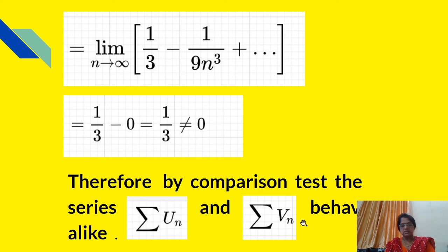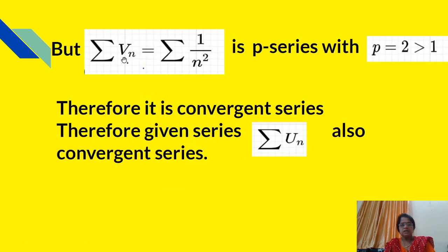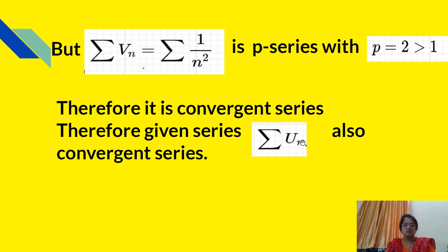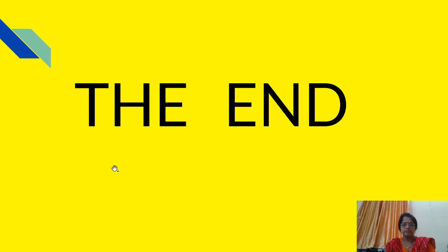Therefore by the comparison test, Σun and Σvn behave alike. Here Σvn = Σ 1/n², which is a p-series with p = 2 > 1. Therefore it is a convergent series, and hence the given series Σun is also a convergent series.